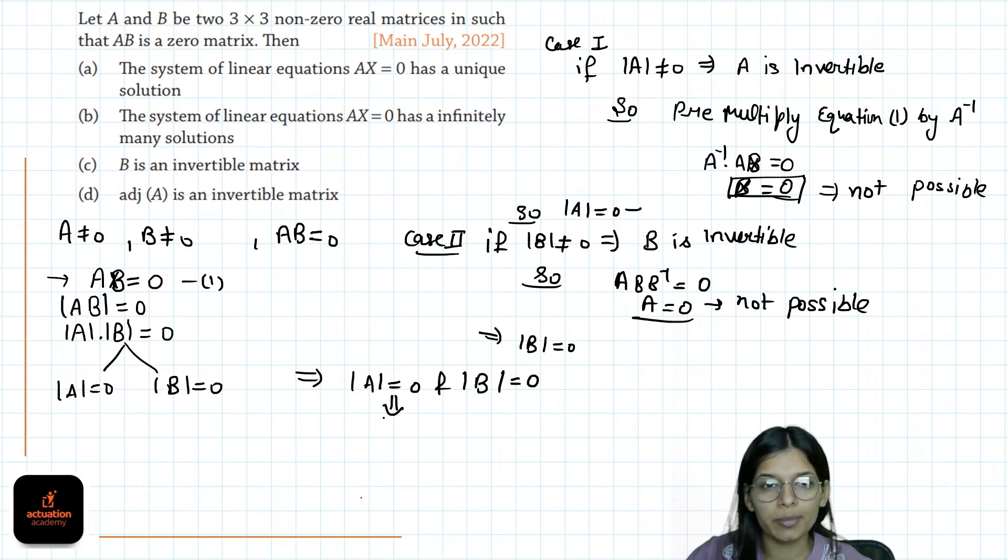Determinant of A is 0 implies AX equals 0 has infinitely many solutions. And this is single correct. So option B will be the correct answer.